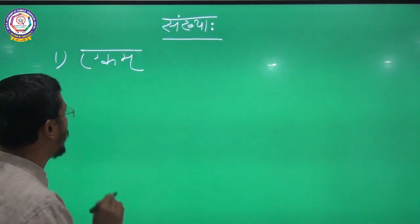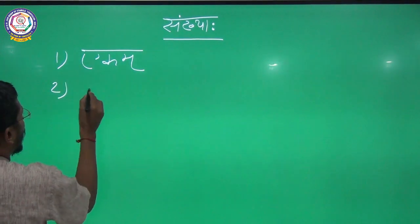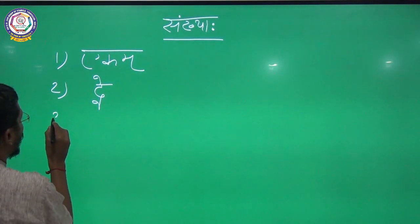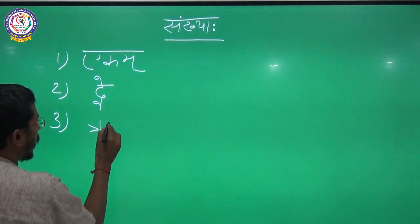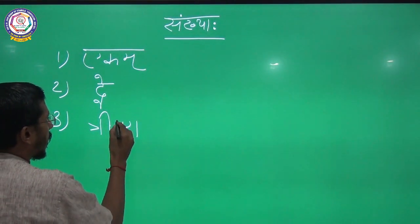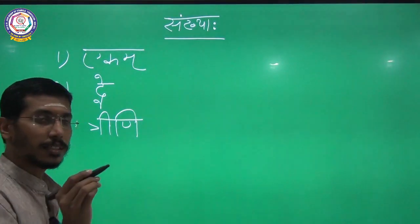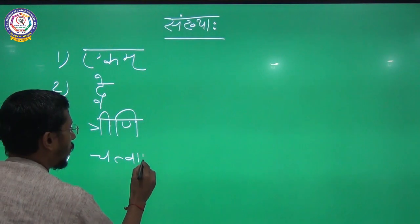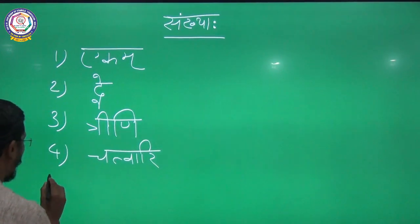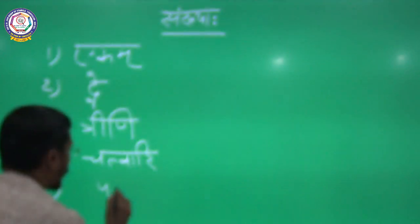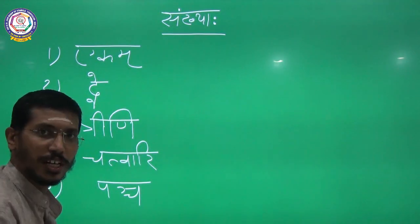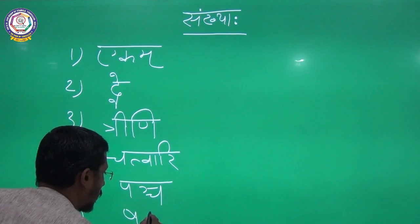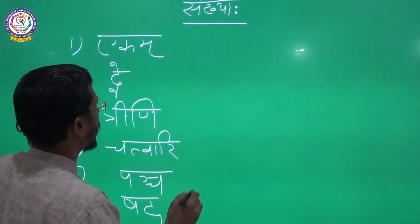Ekam — One. Dwe — Two. Trini — Three. Chathwari — Four. Panch — Five. Shad — Six.